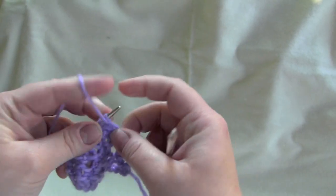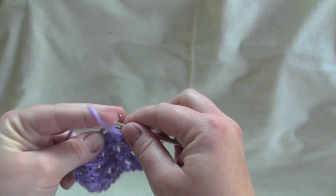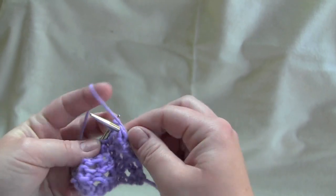For row two, very simple, all you do is purl all of your stitches.